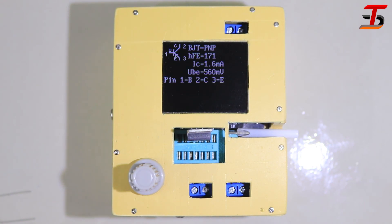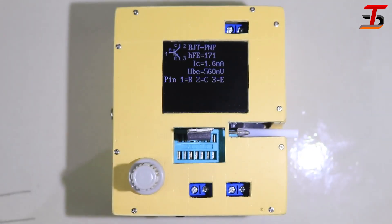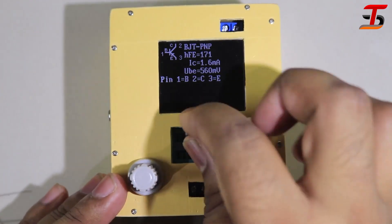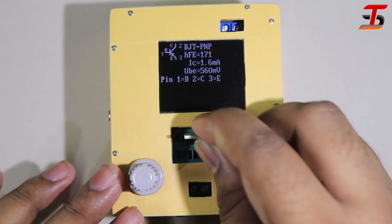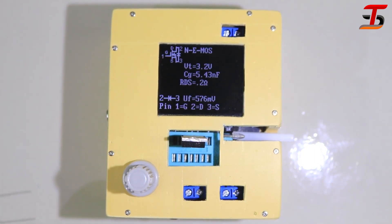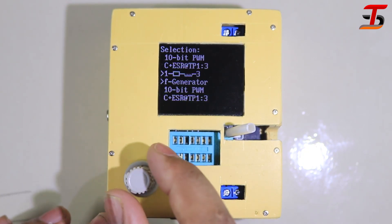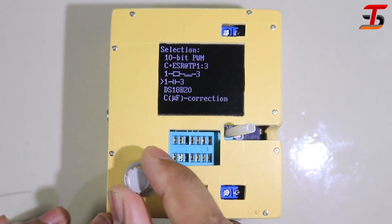Similarly, I tested different type of components. All those results are correct. You can measure any type of electronics components, like transistor, resistor, diode, MOSFET, LED, LDR, speaker, capacitor, and all other components.